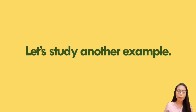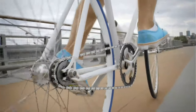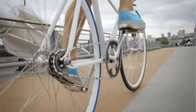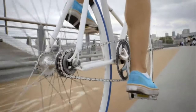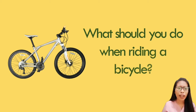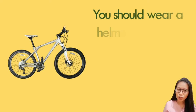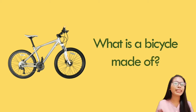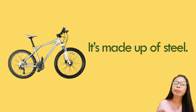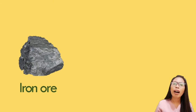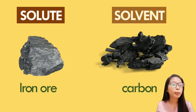Let's study another example. What should you do when riding a bicycle? You should wear a helmet to protect your head and knee pads to protect your knees. What is a bicycle made of? It's made of steel. We get steel from mixed carbon and iron ore. Iron ore is the solute, while carbon is the solvent.